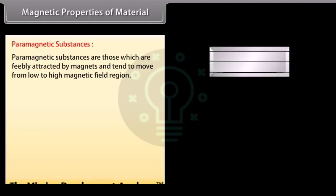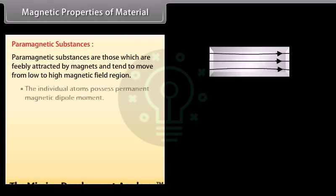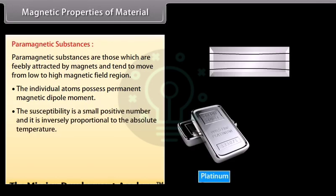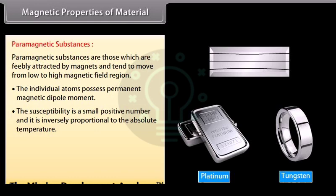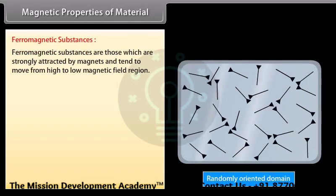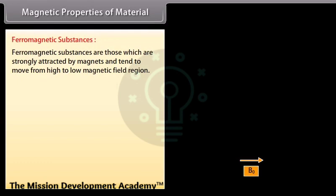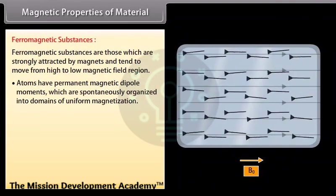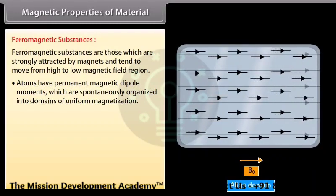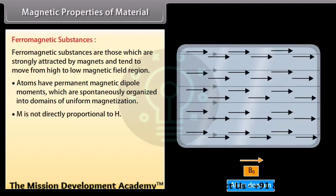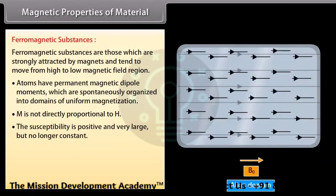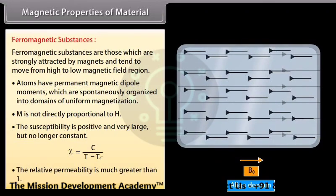Paramagnetic substances are feebly attracted by magnets and tend to move from low to high magnetic field regions. Individual atoms possess permanent magnetic dipole moments. The susceptibility is a small positive number and is inversely proportional to absolute temperature: χ = C/T. The relative permeability is slightly greater than 1. Ferromagnetic substances are strongly attracted by magnets. Atoms have permanent magnetic dipole moments spontaneously organized into domains of uniform magnetization. M is not directly proportional to H. The susceptibility χ = C/(T − T_C) is positive and very large. The relative permeability is much greater than 1.